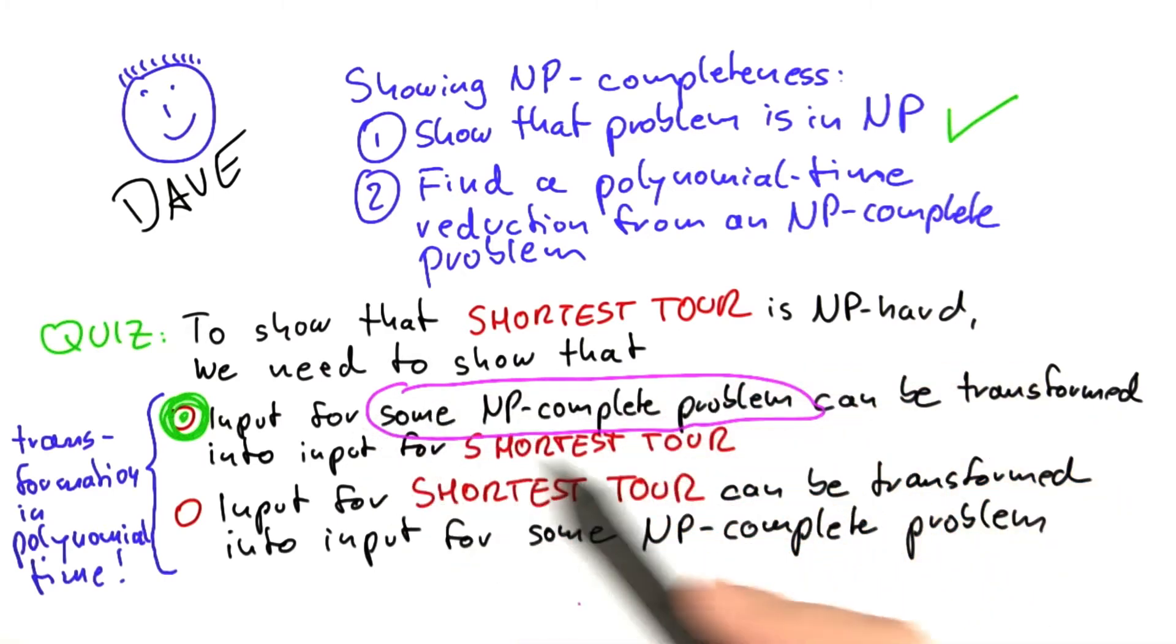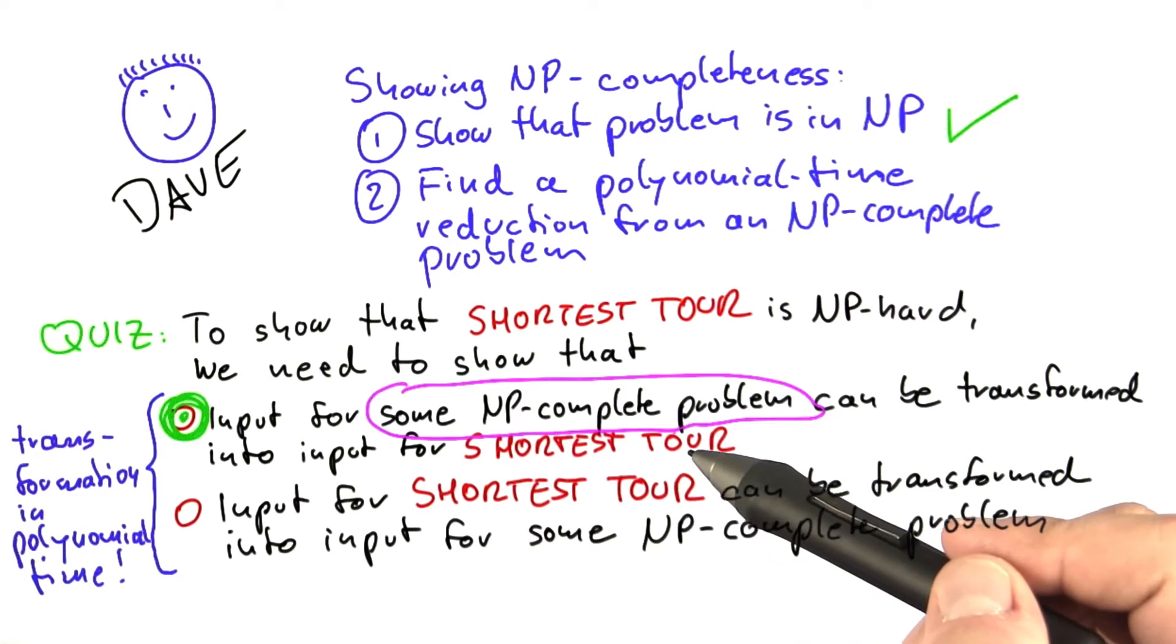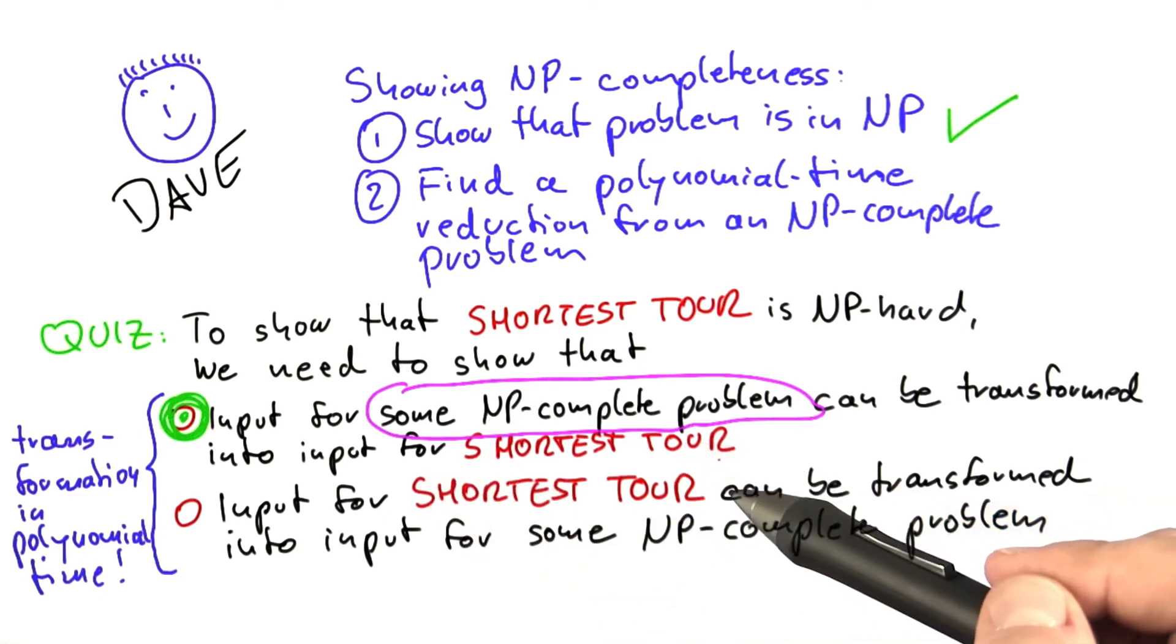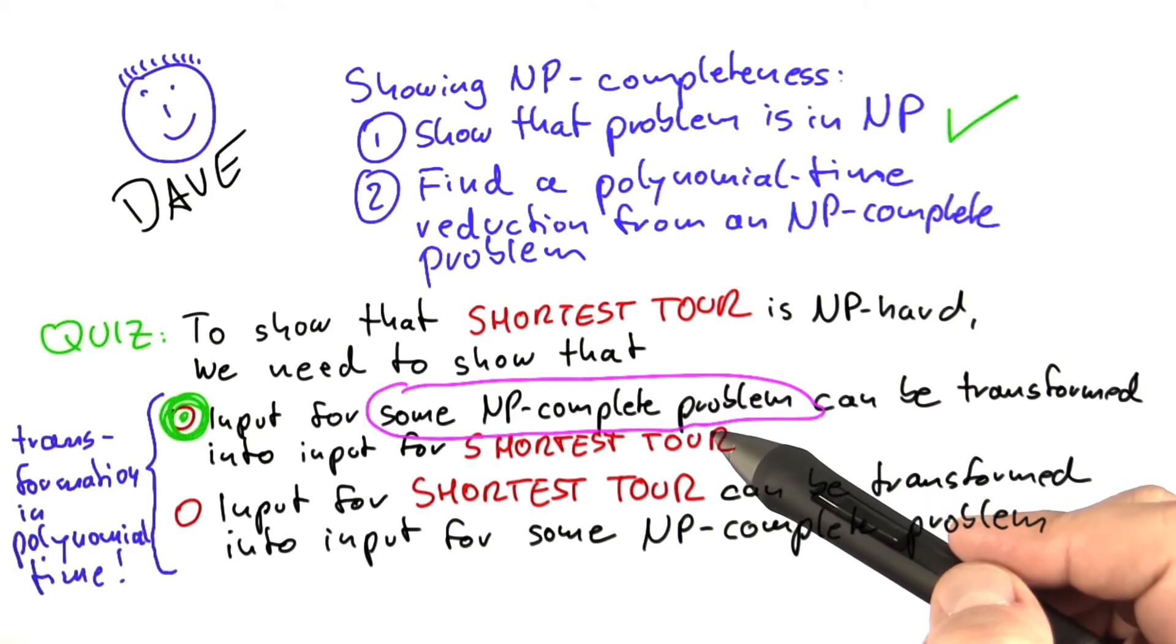Because when you have a very similar problem, and that's what you've seen with vertex cover and independent set, then the reduction becomes much easier to do. And we saw with SAT and clique, for example, that if you have problems that are a bit different, then you might run into trouble.